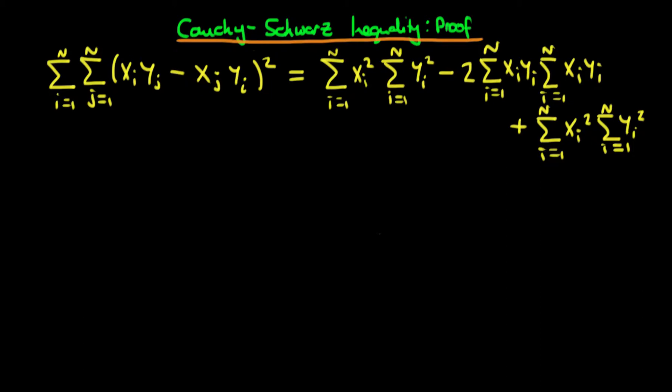In this video, we're going to finish our proof of the Cauchy-Schwarz inequality. So at the end of the last video, we had that this double sum on the left-hand side is equal to this mess of terms on the right-hand side.